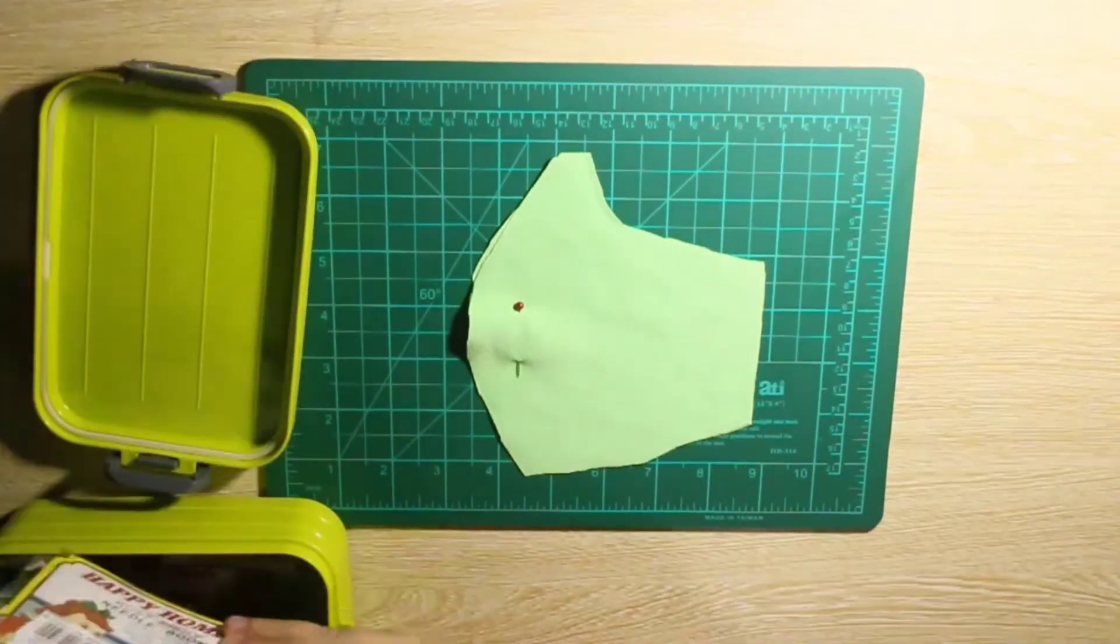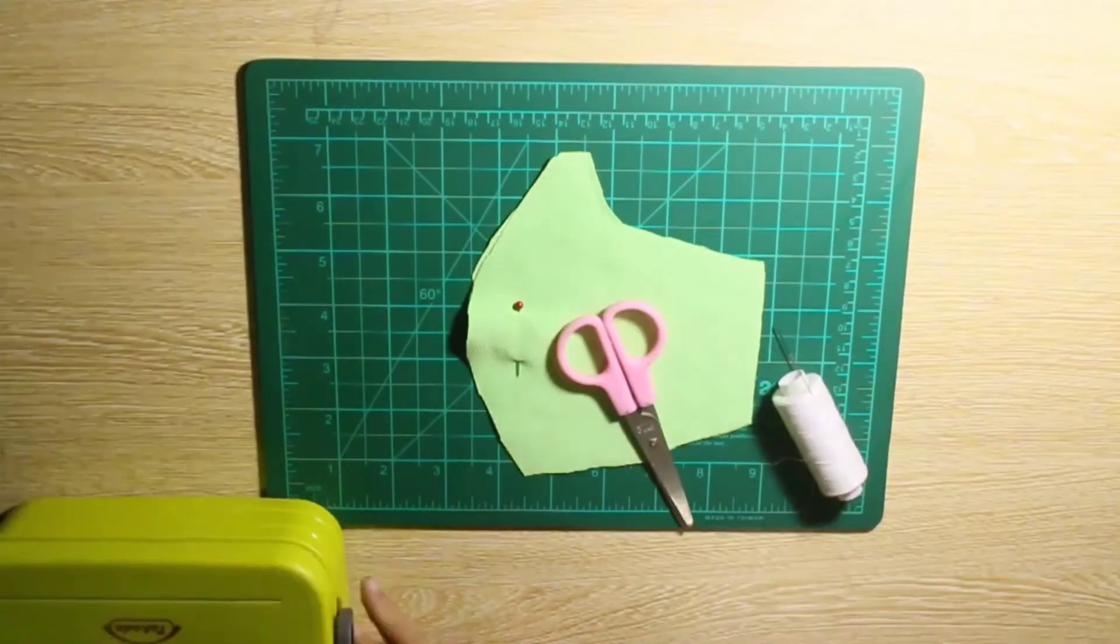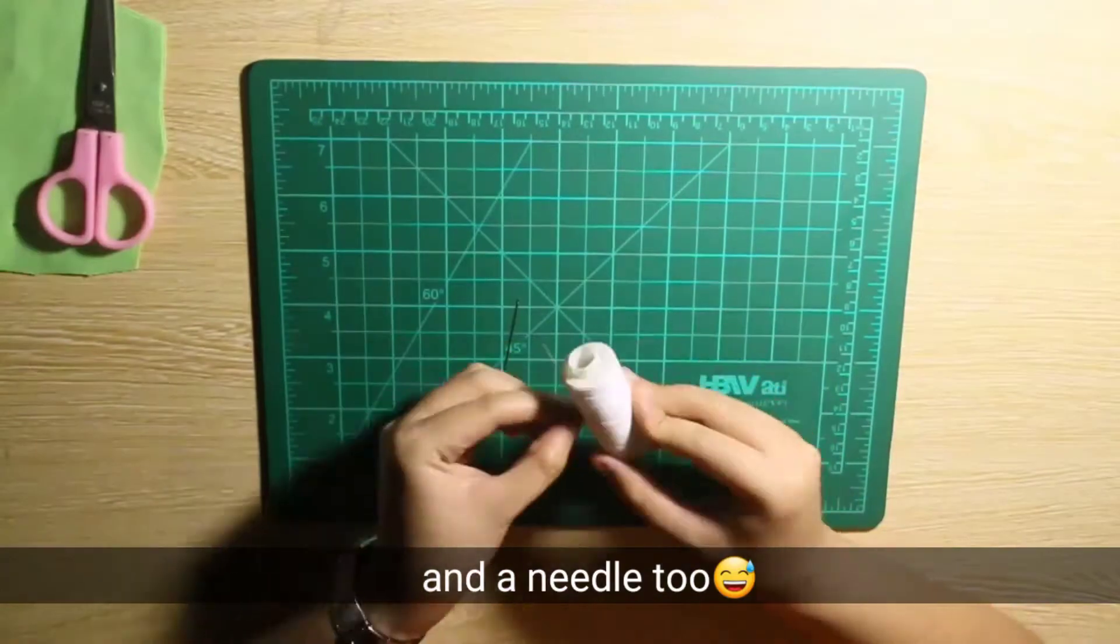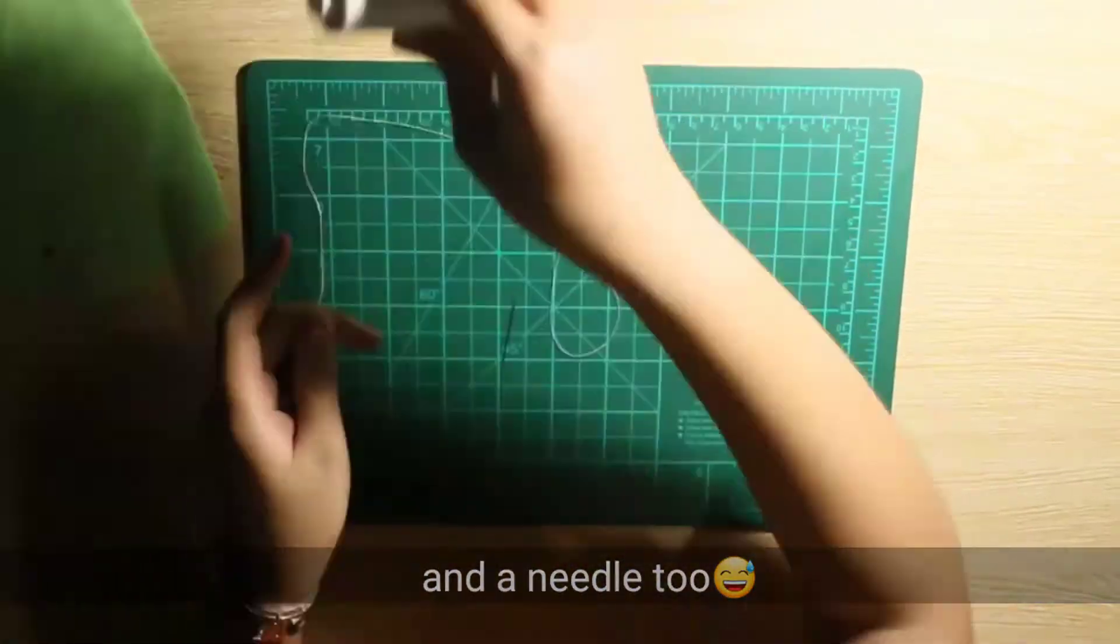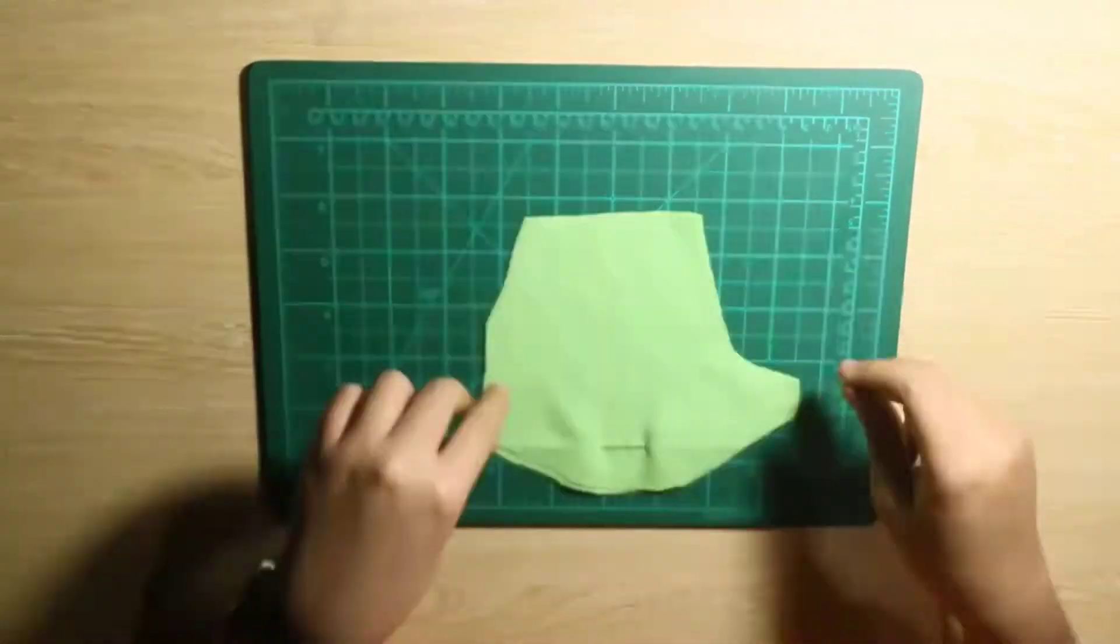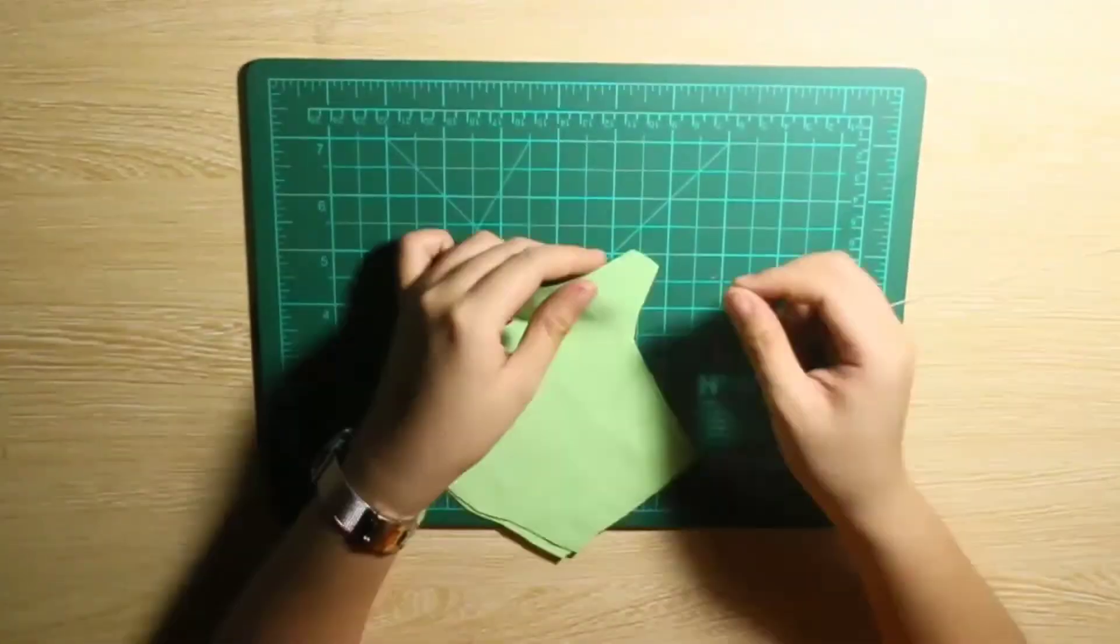Next off you're gonna wanna grab your thread and a pair of scissors. For this you're gonna start sewing along the line where that pin is.